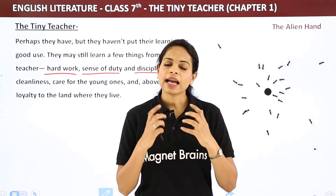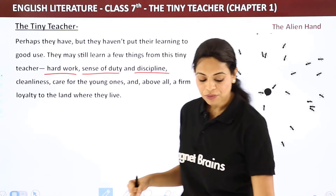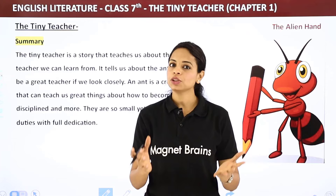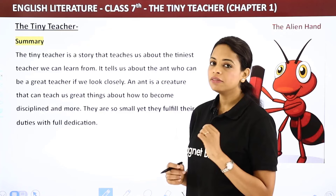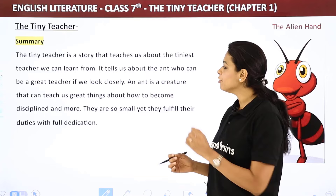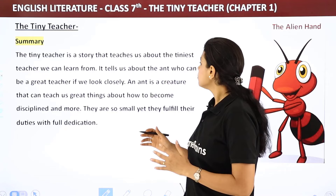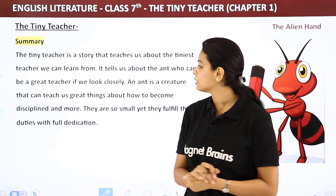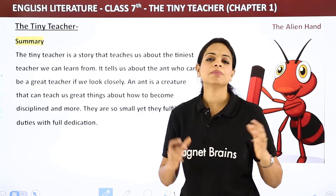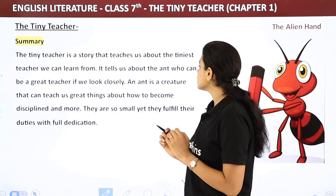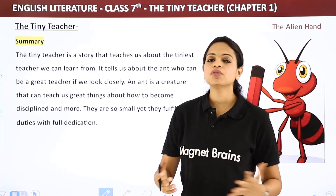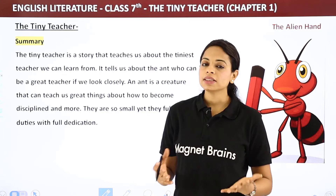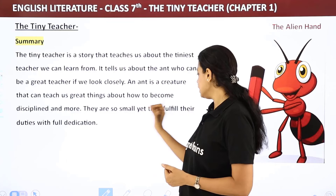Now we are done with the chapter. Let's quickly look at the summary. 'The Tiny Teacher' is a story that teaches us about the tiniest teacher we can learn from — the ant, who can be a great teacher if we look closely. An ant is a creature that can teach us great things about how to become disciplined, organized, honest, and loyal.